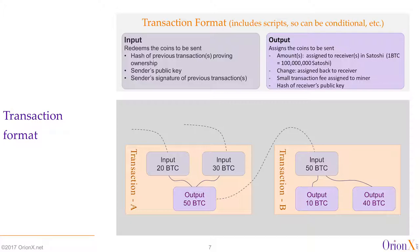The output portion assigns the coins to be sent, including the amount in units of Satoshi — one Satoshi is one hundred millionth of a Bitcoin, so one Bitcoin equals one hundred million Satoshis. This granularity allows enough significant digits as Bitcoin's value varies. Whatever you didn't spend is returned as change, and a small transaction fee is assigned to the miner. The output also includes the hash of the receiver's public key as proof of destination.